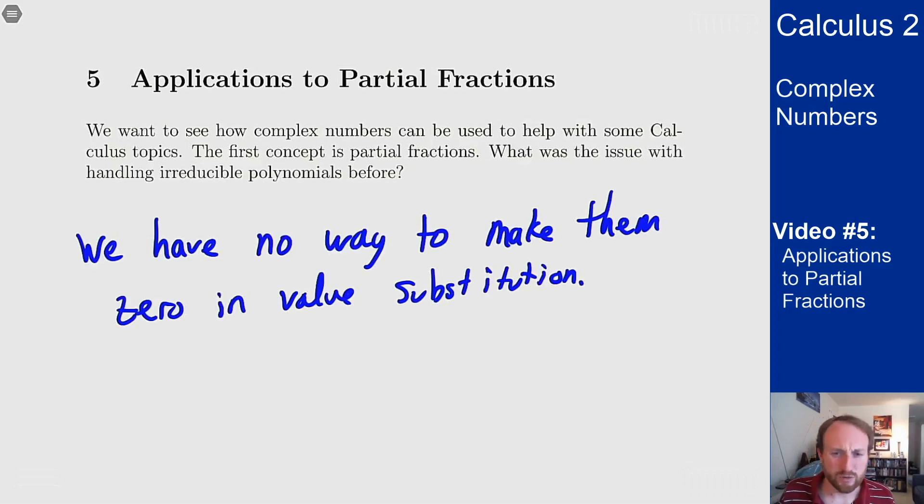Linear factors were great because they gave us a nice value so x equals two, x equals four, we could plug in, make that term go away and cancel out most of the terms of my expression leaving one or two left over that were easy to solve for. But with irreducible quadratics we had no way to make them zero so we couldn't get rid of them. This involves needing to solve bigger systems of equations to be able to do partial fractions.